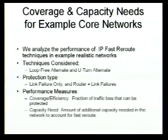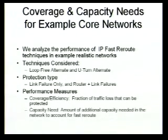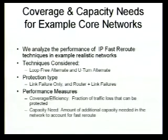In terms of performance measures, the first one we look at is coverage or efficiency. If there is a failure and there was no IP fast reroute, some amount of traffic will be lost for some period of time — whether it is 200 milliseconds, 500 milliseconds, or a few seconds — until IGP convergence happens. How much of that traffic can be saved by doing IP fast reroute? We could do the same using MPLS fast reroute, but we are only talking about IP fast reroute here.